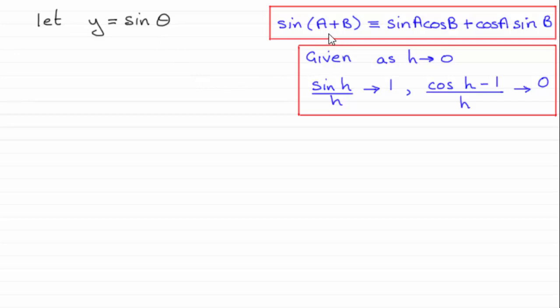Now what I'm going to be assuming throughout this video is that you're familiar with this identity the sine of a plus b and also this result about limits where h is an angle that tends to zero.